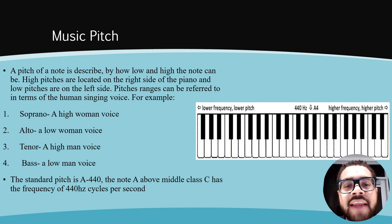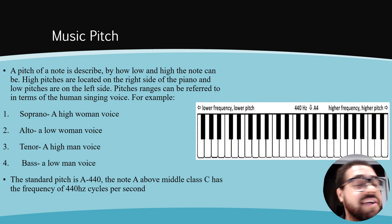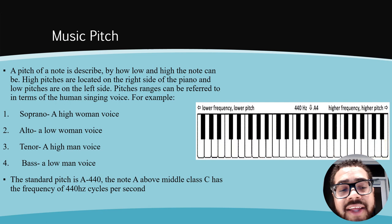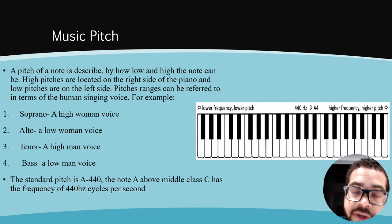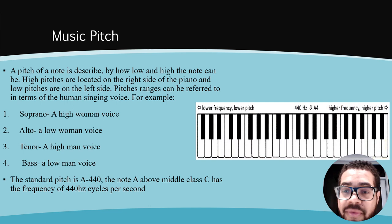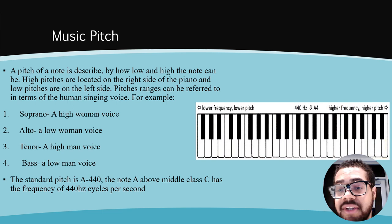Music pitch is the pitch of a note. It is described by how low and high a note can be. High pitches are located on the right side of the piano and low pitches are located on the left side. Pitch ranges can be referenced in terms of human singing voices — soprano, a high woman's voice; alto, a low woman's voice; tenor, a high man's voice; and bass, a low man's voice. A standard pitch is note A, 440. The note A above middle C has a frequency of 440 hertz cycles per second. As you see in the example on the right, it shows a piano where the left side has lower frequency, which is lower pitches, and the right has higher frequencies, which is higher pitches. Right in the middle where it says A4, A means note A, and 440 hertz means the frequency cycles per second.